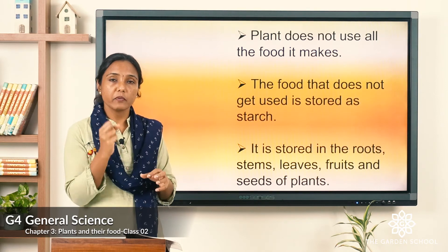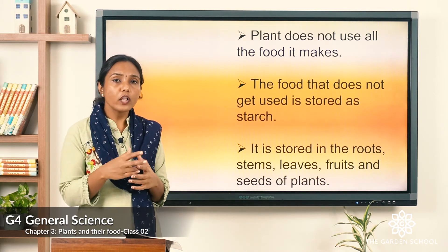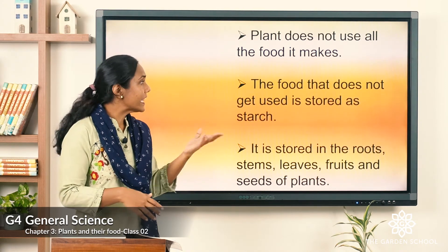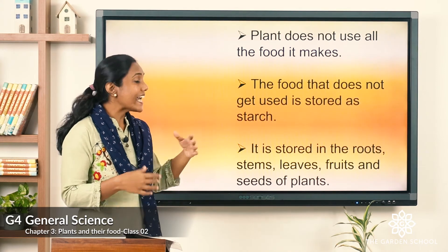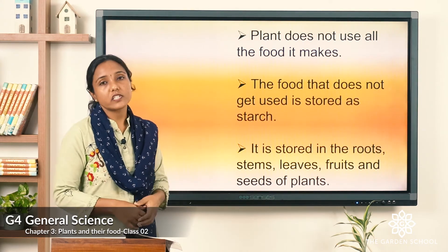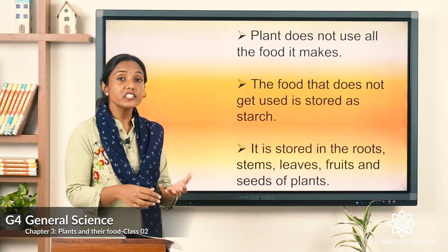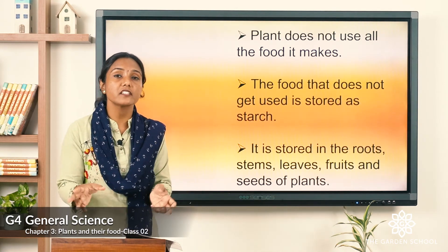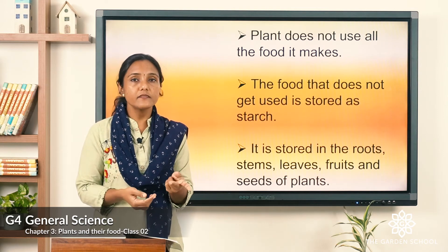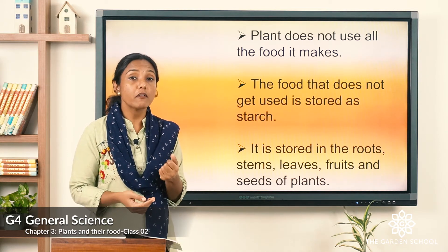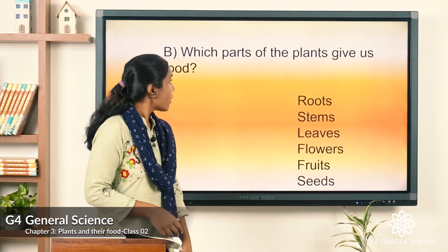Did you know that plants do not use all the food they make? The food that is not used is stored as starch, and that starch is stored in different parts of the plant — in the stem, roots, leaves, fruits, seeds, and flowers.